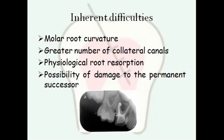There are inherent difficulties with pulpectomy in primary teeth. Molar roots are curved to accommodate the permanent tooth bud between the roots, making very good cleaning and shaping difficult. There are also many collateral canals, so leaving behind tissue or debris is highly possible. Physiological root resorption begins early, so what you think is the apex may not be the true apex — material can extrude through areas of lateral resorption. There is also a possibility of damage to the permanent successor if files are extruded during cleaning and shaping.